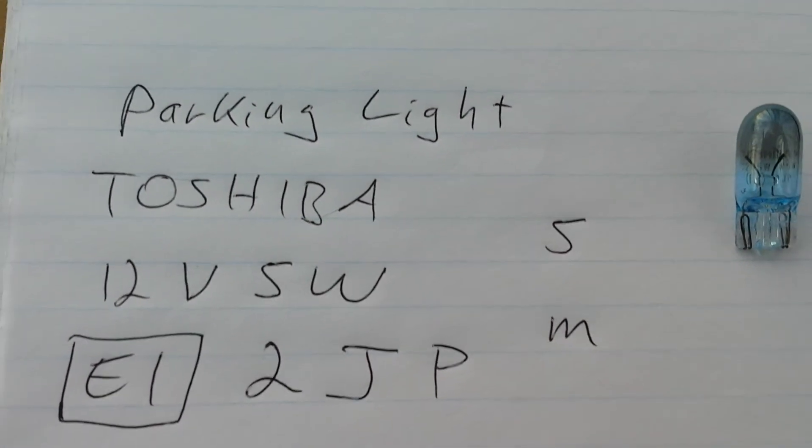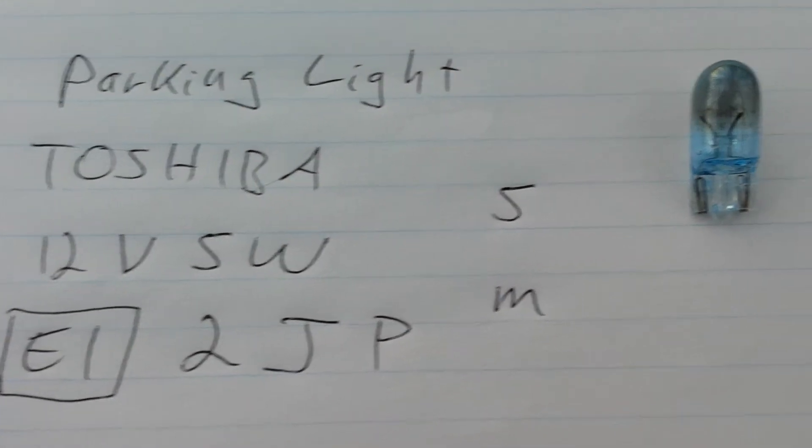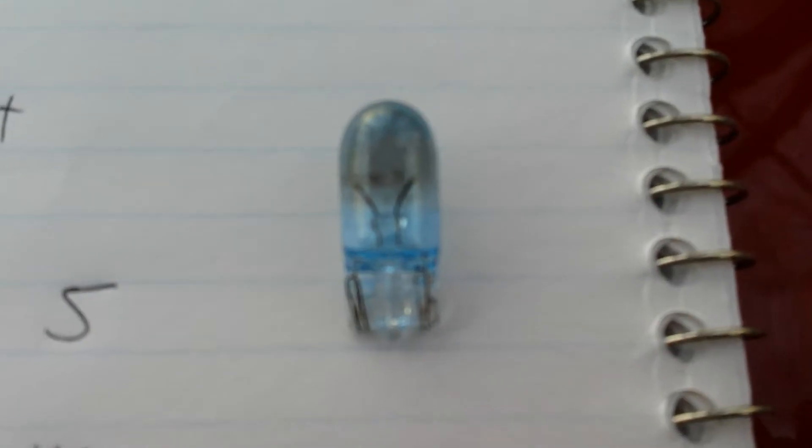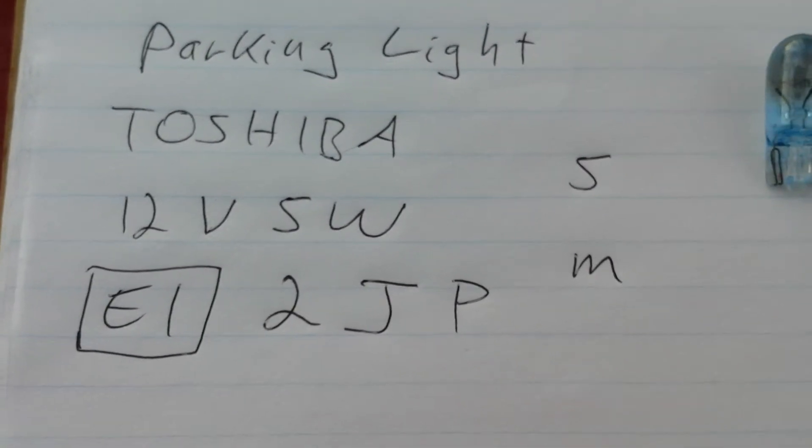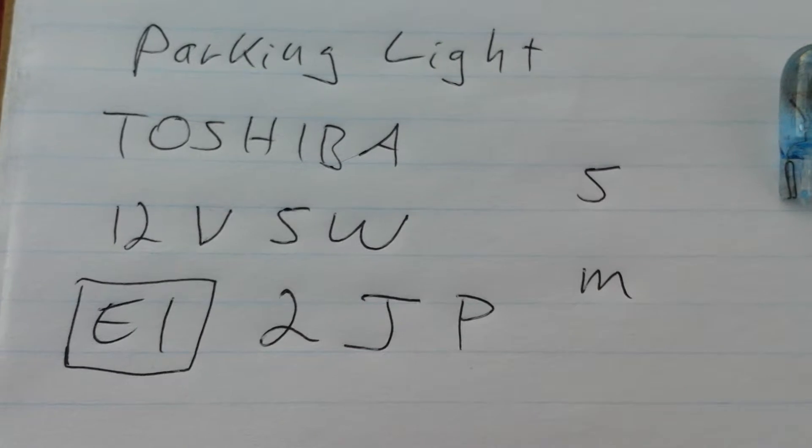And here's the same thing for the parking light. The lettering on this is really faded, very hard to see. I took a magnifying glass out and I had written down here exactly what it says.